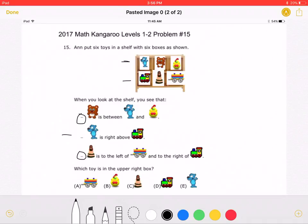Let's start with the first line that says the brown bear is between the blue bear and the duck. This means that the brown bear must be over here in the middle.